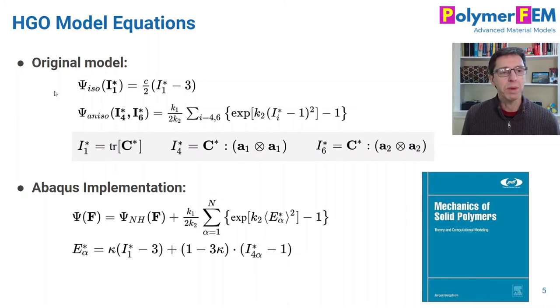Abaqus has also decided to implement the HGO model. It's one of the built-in features and what Abaqus often does is they modify the model a little bit. So they made a few changes to it. They made it compressible, as you can see here. It's a traditional Neohookean energy function. And then they specified an arbitrary number of fiber families, so you can have more than two or three, whatever you like.